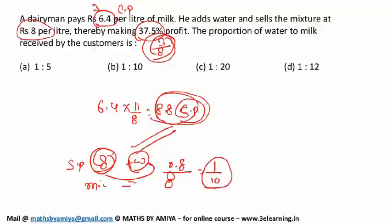I will repeat again. Your cost price is 6.4 and your profit expected is 37.5%, this is equivalent to 3 by 8. So add cost price. If we go with the profit, our selling price should be 8.8. But he is selling at rupees 8. What does it mean? The difference is due to water added.